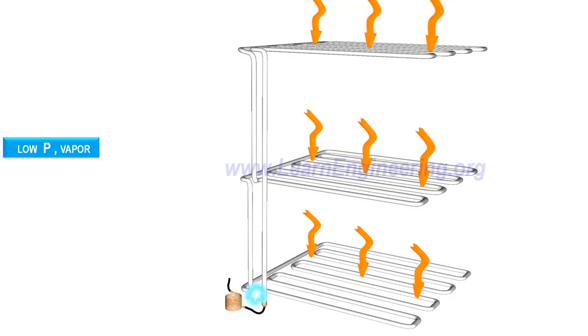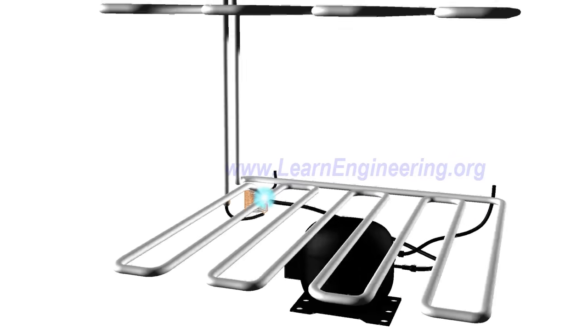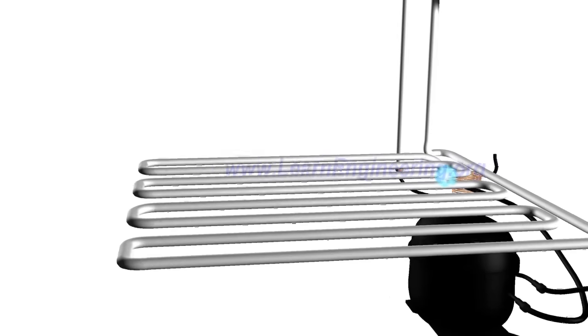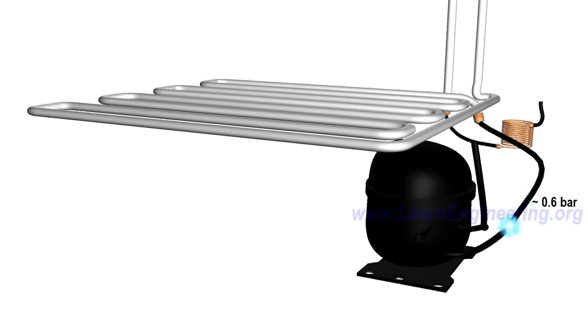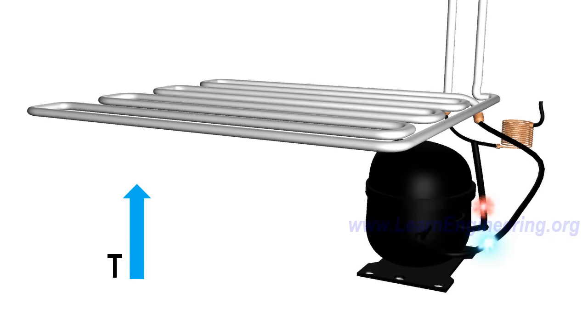If we can take this low pressure vapor refrigerant to the state before the throttling process, that is high pressure liquid state, we will be able to repeat this process. So first step: let's raise the pressure. A compressor is introduced for this purpose. The compressor will raise the pressure back to its initial value. But since it is compressing gas, along with pressure, temperature will also rise. It is unavoidable.